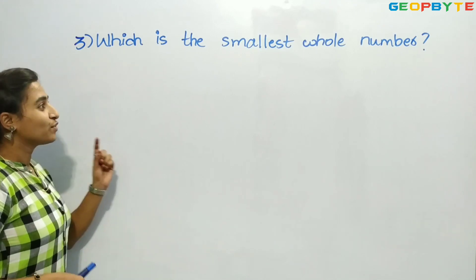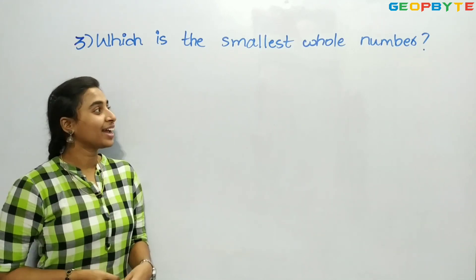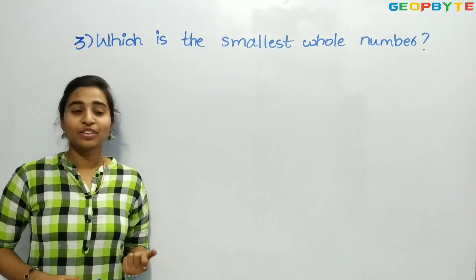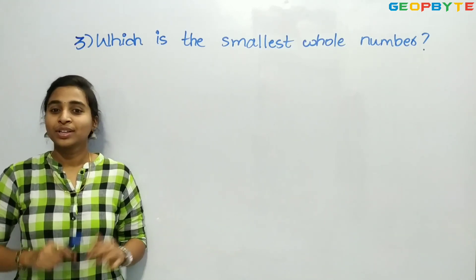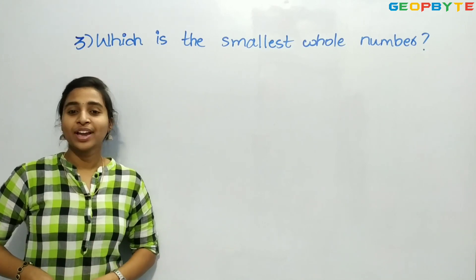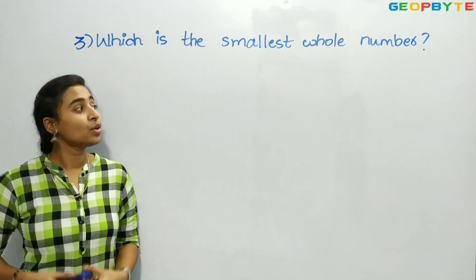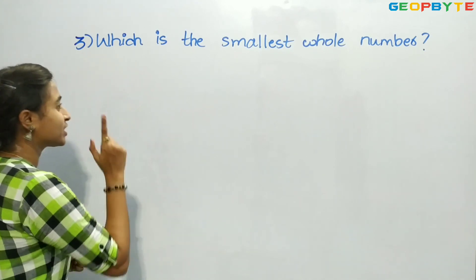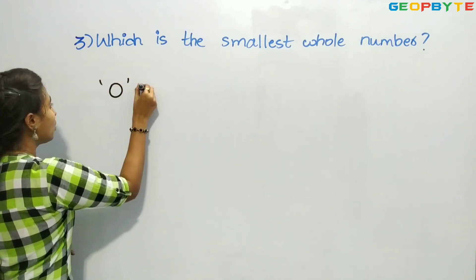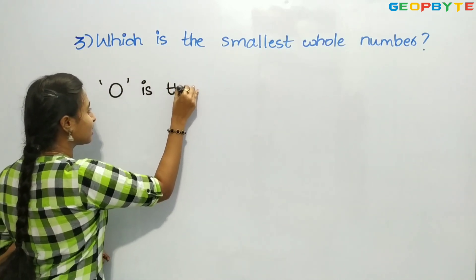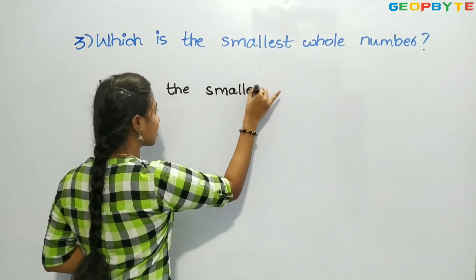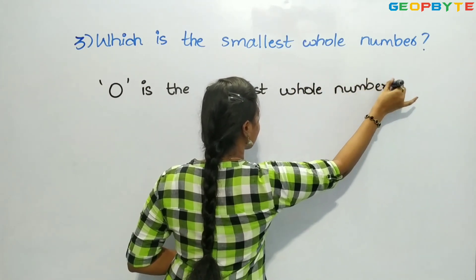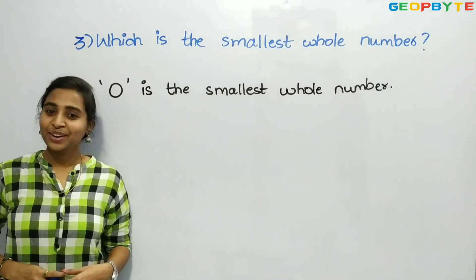Now let us see the third question: which is the smallest whole number? You know whole numbers start from 0. So obviously, 0 will be the smallest whole number. Without 0, the numbers are called natural numbers; when 0 is added, they become whole numbers. The first number where whole numbers start is 0, so 0 is the smallest whole number.